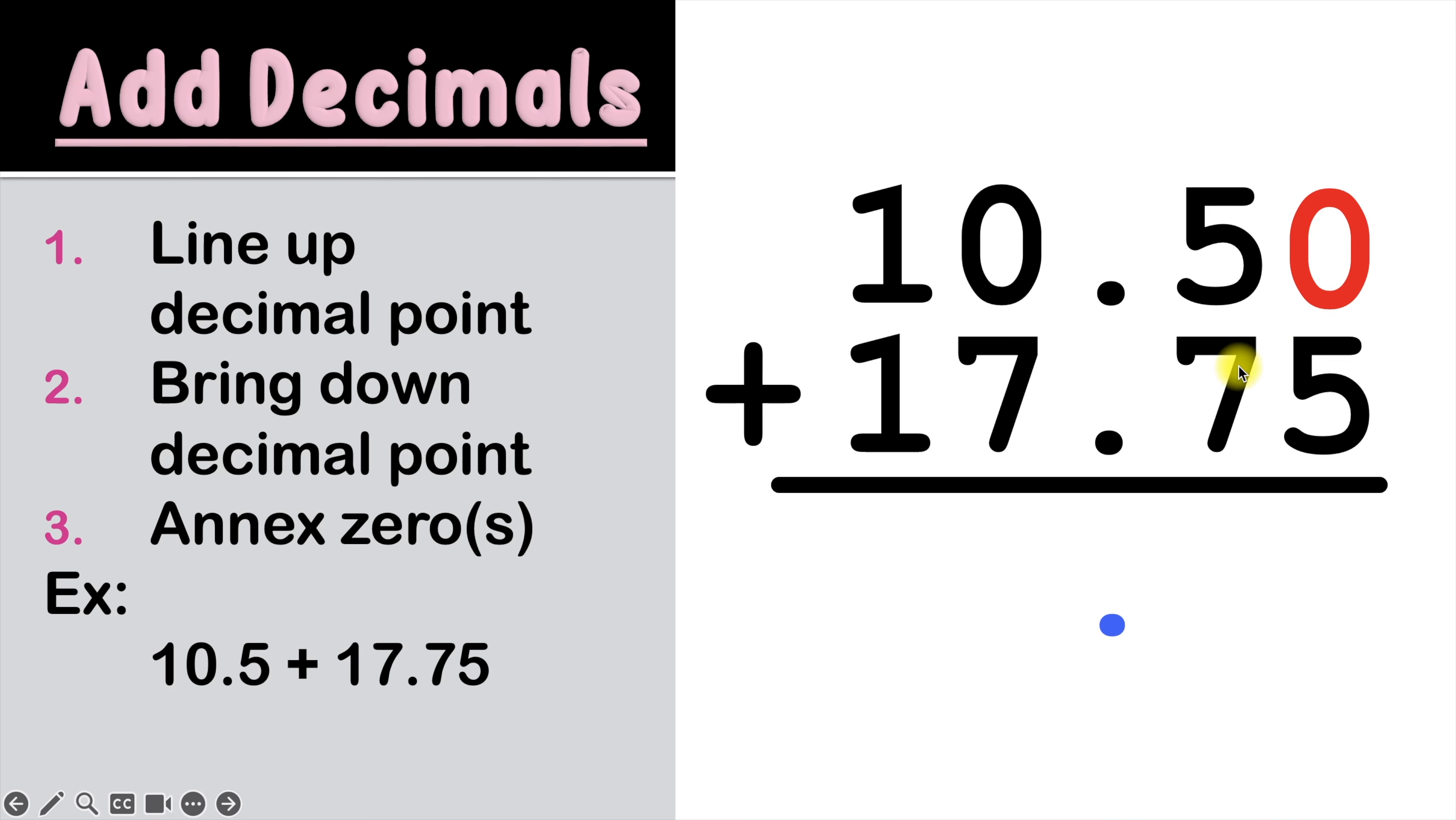Now that everything's nice and neat, we can start our addition. And we always start from the right column. Zero plus five is five. Five plus seven is 12. Now 12 is a two digit number. So in the number 12, we'll bring down the two and carry the one.